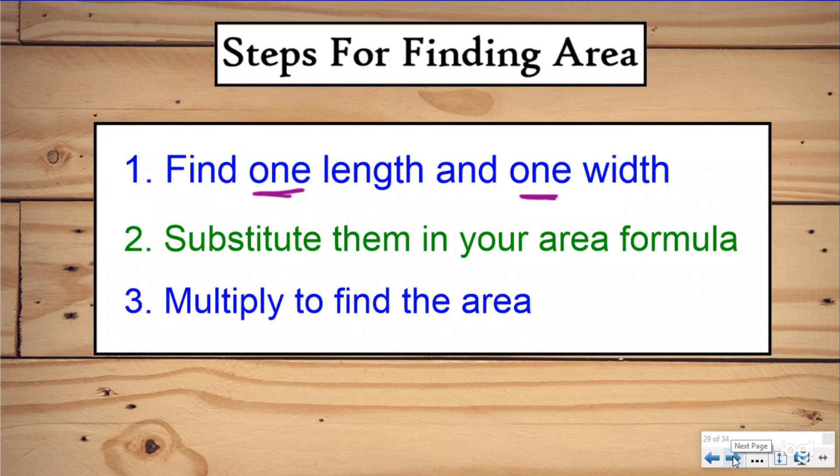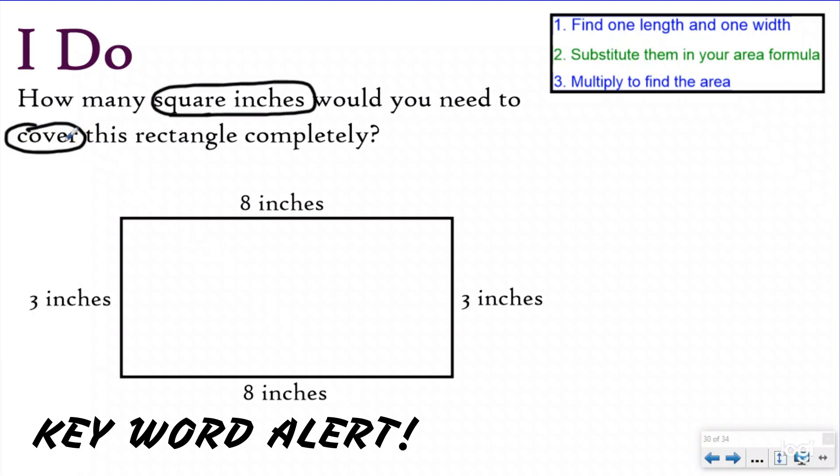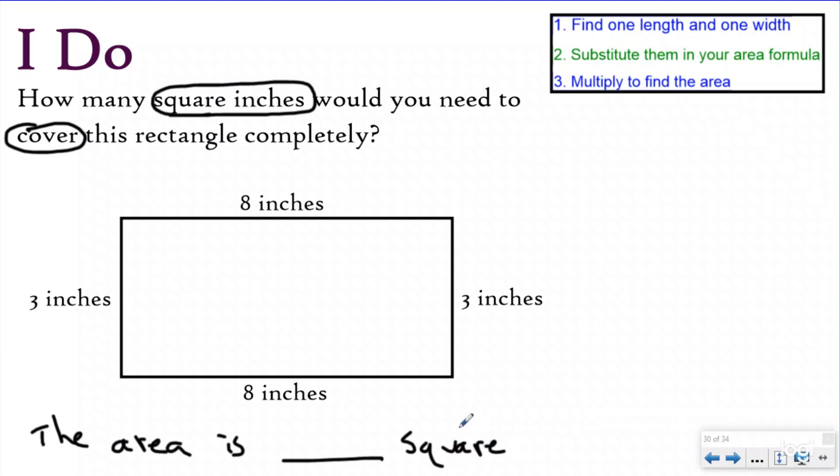Let's take a look at using them in our I do problem. So here it says, how many square inches would you need to cover this rectangle completely? Because it's asking me for square inches and it's telling me to cover this, I know this is really an area problem. So my statement is going to say the area is blank square. And now typically we've been using units, right? Because we were covering them with unit squares. But now our unit is inches. So instead of saying square units, our statement is going to say square inches.